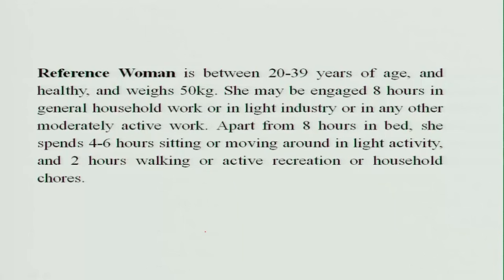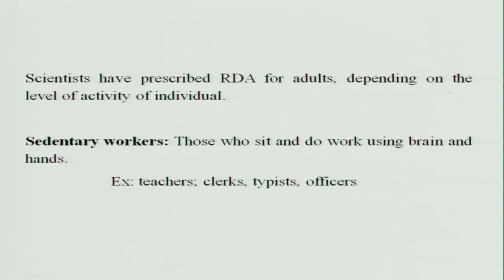Similarly, a reference woman is between the age of 20 to 39 years, weighing 50 kg, free from disease and healthy. She is engaged in 8 hours of general household work, light industry, or any moderately active work. Apart from 8 hours in bed, she spends 4 to 6 hours in a relaxing mood or moving around in light activity, and 2 hours in walking, active recreation, or household chores. This is dependent on the type of activity.